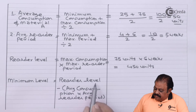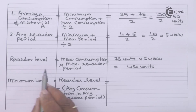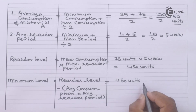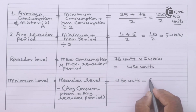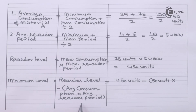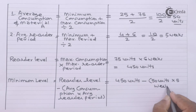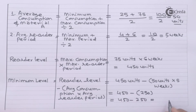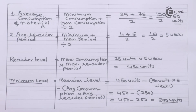Minimum level of stock is calculated as: reorder level minus (average consumption multiplied by average reorder period). That is 450 minus (50 units × 5 weeks) = 450 minus 250 = 200 units. So the minimum level of stock of material A is 200 units.